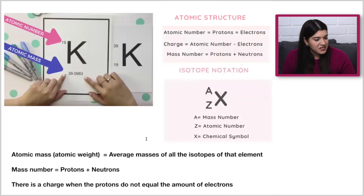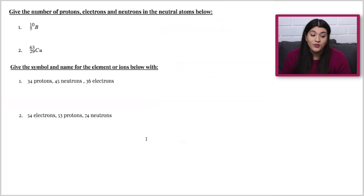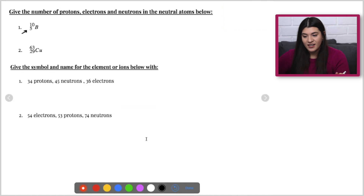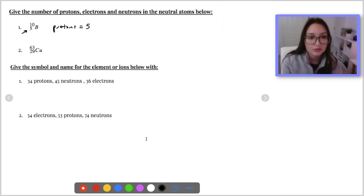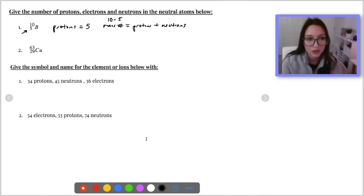Let's start doing some examples using these three formulas. The question says: give the number of protons, electrons, and neutrons in the neutral atom. It told us that it's neutral. This is an isotope notation — the 5 is our number of protons. And the number of neutrons is also going to be 5, because we do 10 minus 5. We know our mass number is equal to protons plus neutrons. And because it's neutral, the electrons are also 5.